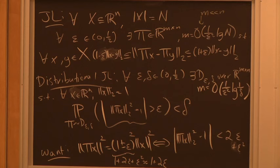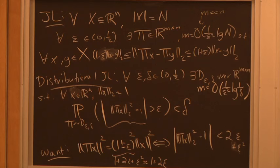The basic idea is: take a fixed vector x and perform a random rotation — you get a random point on the sphere. It comes down to proving that a random point on the sphere has its squared mass in the first m coordinates tightly concentrated. I'm not going to prove JL the way the original paper did, but I wanted you to know how they did it.